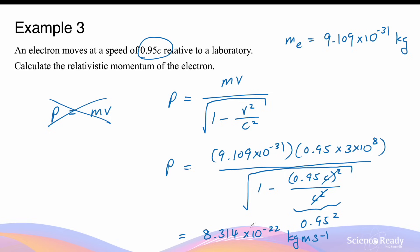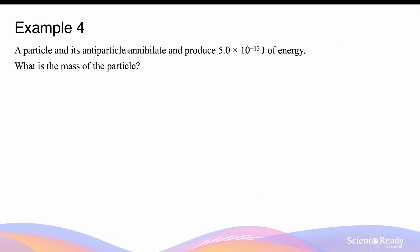If you had calculated the momentum using the classical momentum formula you would have obtained a value smaller than the relativistic momentum. Next: a particle and its antiparticle annihilate and produce 5 times 10 to the minus 13 joules of energy. What is the mass of the particle?